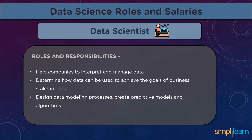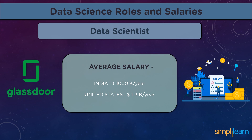Here are the roles and responsibilities of a Data Scientist. As a Data Scientist, you will be expected to help companies interpret and manage data and solve complex problems. Data scientists work closely with business stakeholders to understand their goals and determine how data can achieve those goals. They also design data modeling processes, create algorithms and predictive models to extract the data for business needs. According to Glassdoor, in India a Data Scientist can earn approximately 10 lakh rupees per annum, and about 113,000 dollars per annum in the United States.